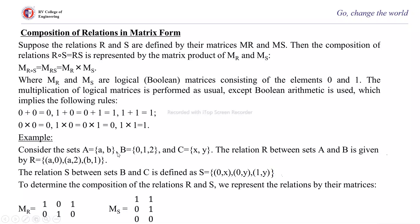Now consider two sets A={a,b}, B={0,1,2}, and C={x,y}. R is a relation between sets A and B given by R={(a,0),(a,2),(b,1)}, and S is a relation between B and C given by S={(0,x),(0,y),(1,y)}. We need to determine the composition of relations R and S, and we represent the relations by matrices.